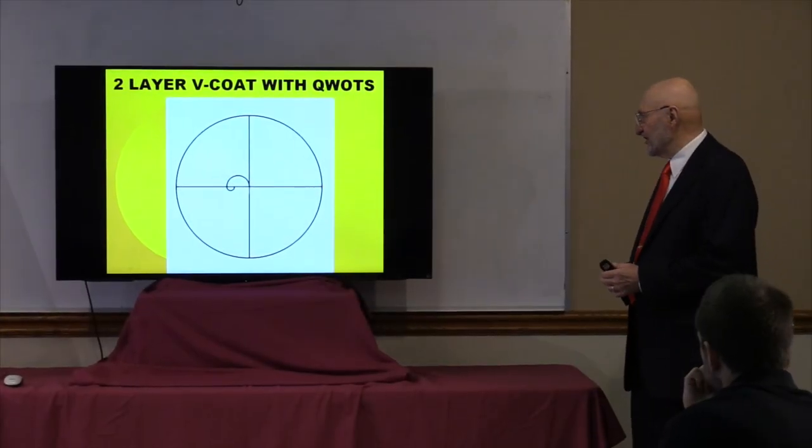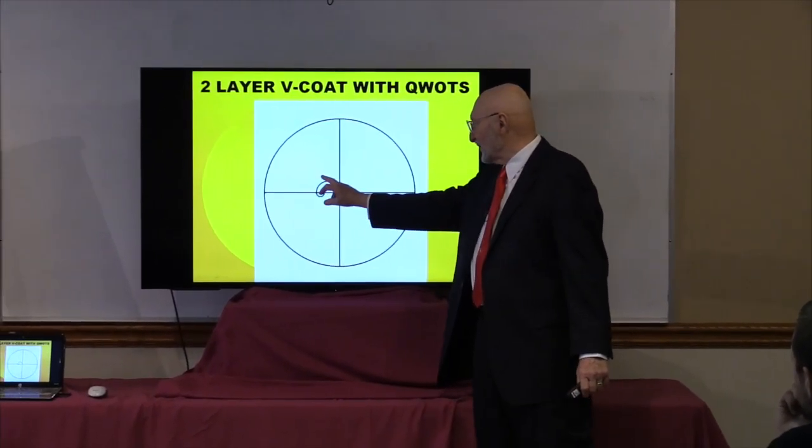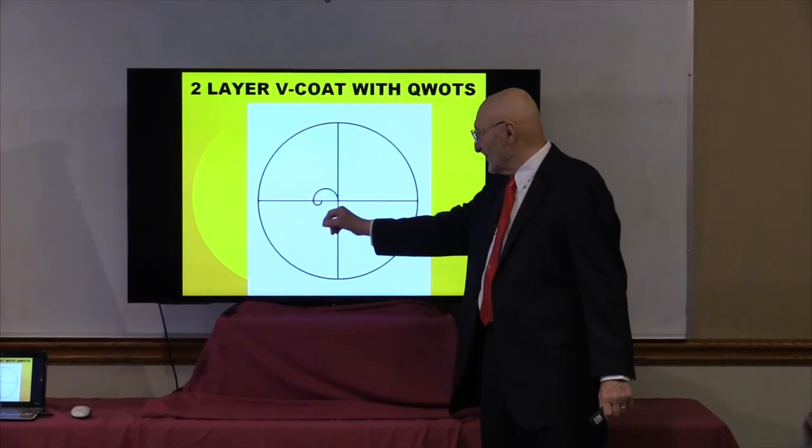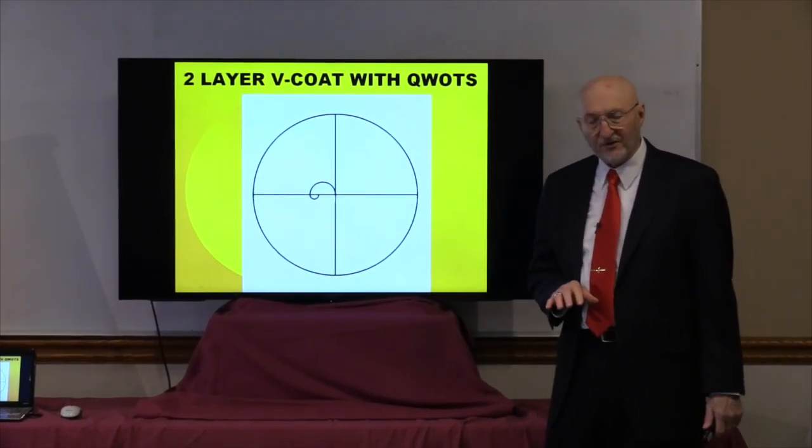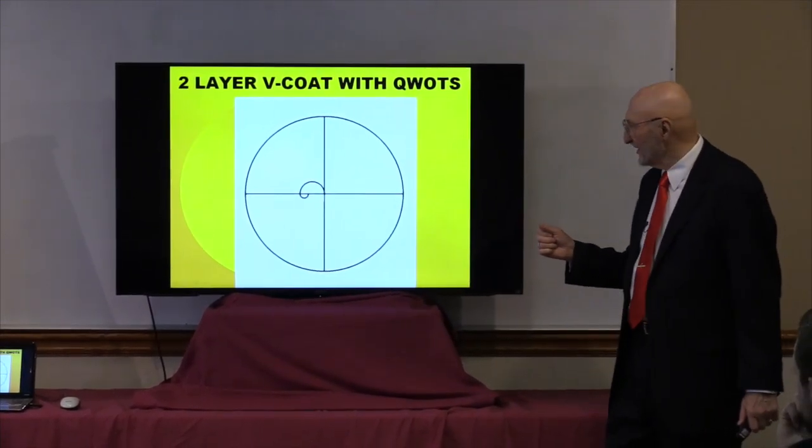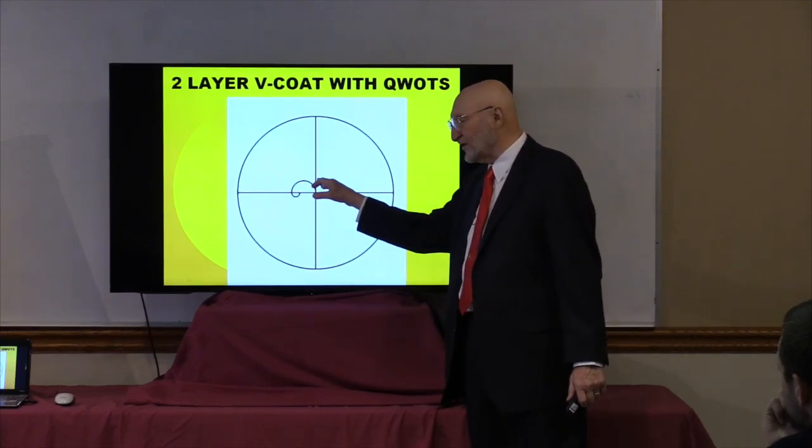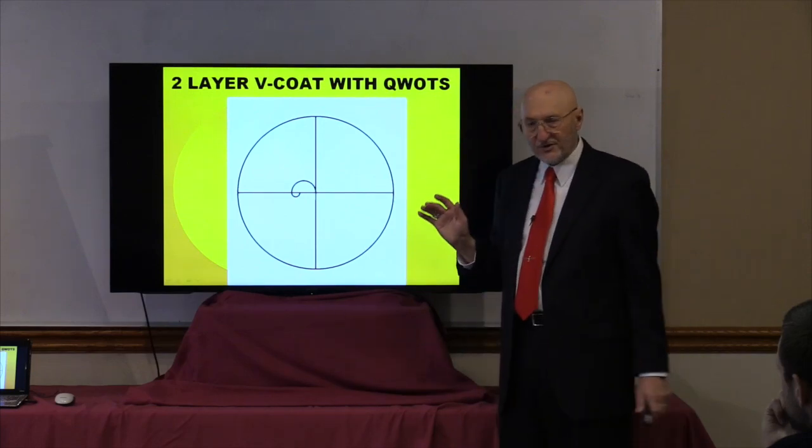Now there's a special case of a V-coat where I could have a quarter wave and a quarter wave. So if this is the magnesium fluoride, then this one here might be an index of about 1.7, which is kind of close to aluminum oxide. So in that case, a quarter wave and a quarter wave will get me the V-coat, and its curve will look similar to the other ones.